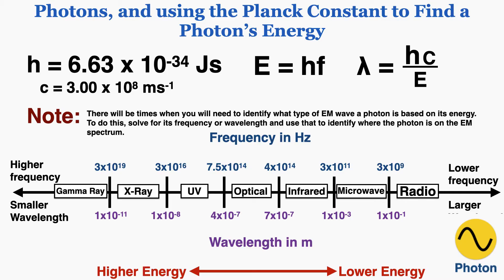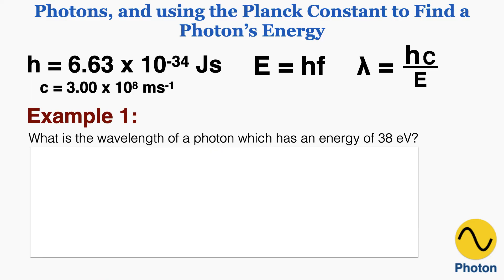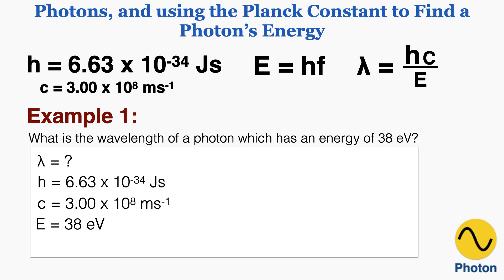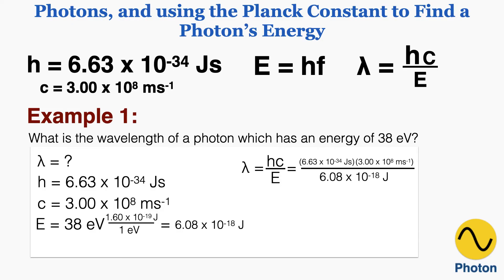Example 1: What is the wavelength of a photon which has an energy of 38 electron volts? We're looking for wavelength. We know the Planck constant, the speed of light, and the energy is 38 electron volts. Because the Planck constant works with joules and not electron volts, I'll convert first using the factor label method: 38 eV times 1.6 times 10 to the negative 19th joules per eV gives 6.08 times 10 to the negative 18th joules. Plugging into the wavelength equation gives a wavelength of 3.27 times 10 to the negative 8 meters. If you know exactly how much energy a single photon contains, you automatically know its exact wavelength.